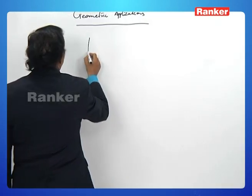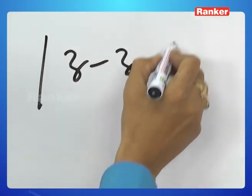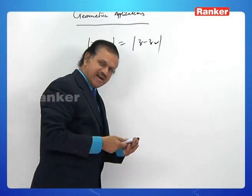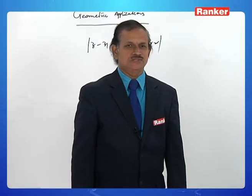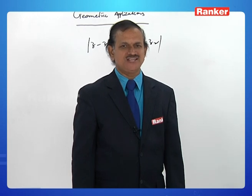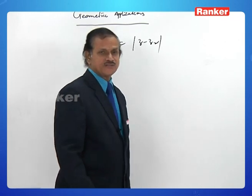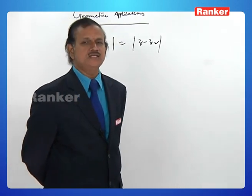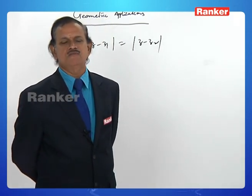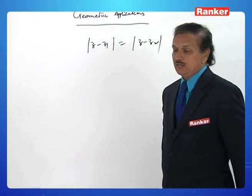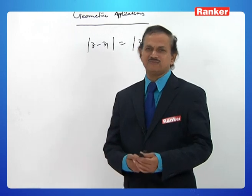Next: |z - z1| = |z - z2|. What is the locus of z? Here z1 and z2 are any given complex numbers and z is an arbitrary complex number. If |z - z1| = |z - z2| is given in the data, how can you find the locus of z?